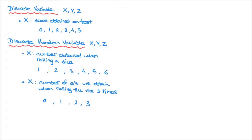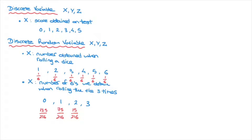For the first example, the probability of rolling a 1 is 1/6, and similarly the probability of rolling a 2, 3, 4, 5, or 6 is also 1/6 each. For the second example — rolling a dice three times and counting sixes — the probabilities are more complex: the probability of rolling zero sixes is 125/216, one six is 75/216, two sixes is 15/216, and three sixes is only 1/216.